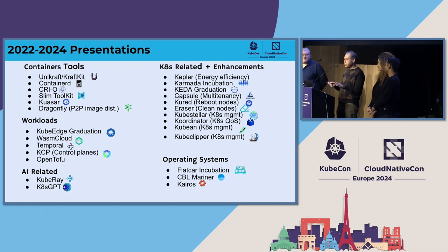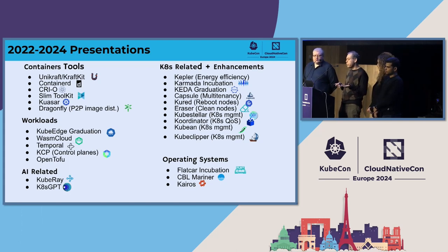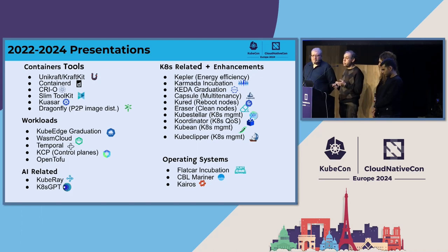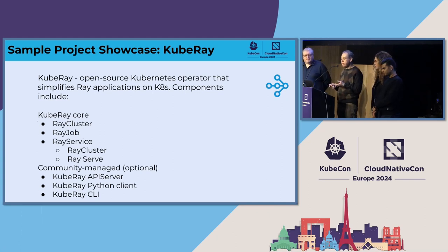Operating systems or special operating systems as Alex was mentioning — examples are Flatcar or Kairos. And finally, the interesting topic very relevant now that a lot of people are talking about: AI-related projects like Kuberay, which helps you scale AI type of workloads and training workloads, and KCPT that allows you to monitor your Kubernetes clusters using natural language connected to an LLM.